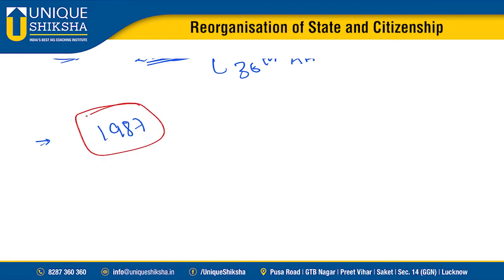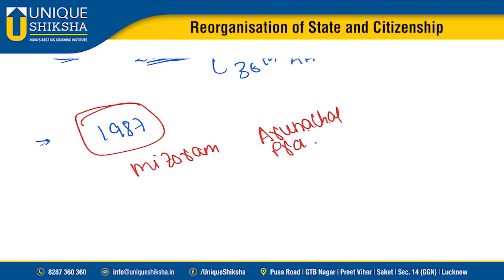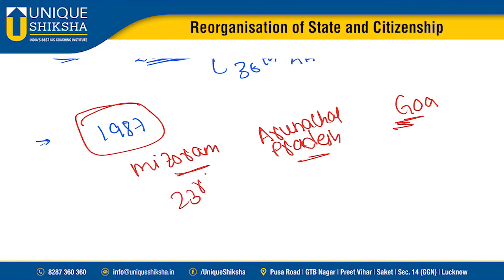In 1987, three states were given full statehood: Mizoram, Arunachal Pradesh, and Goa. Earlier these were Union Territories. Mizoram became the 23rd state, Arunachal Pradesh the 24th state, and Goa the 25th state.